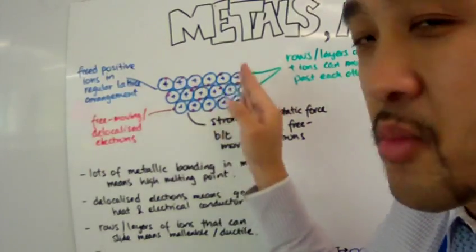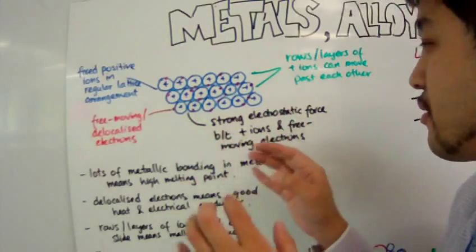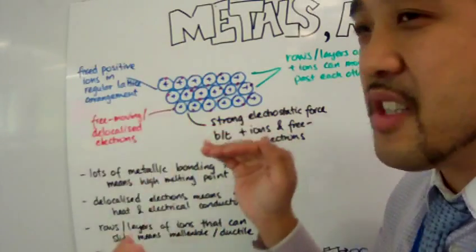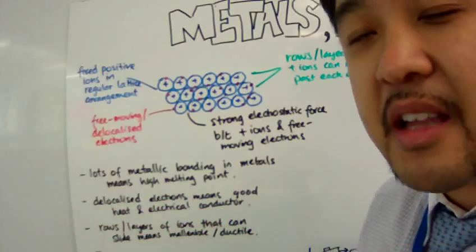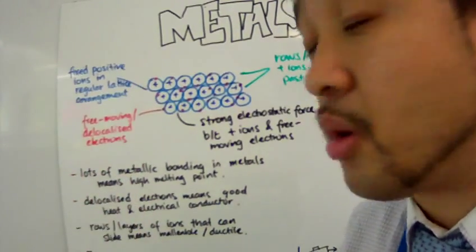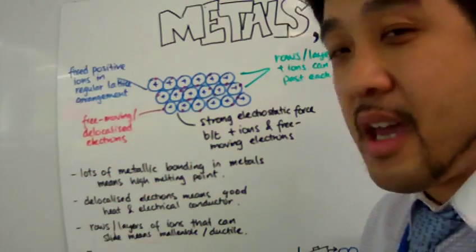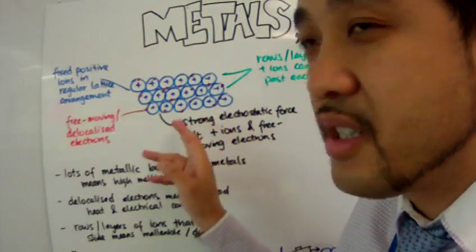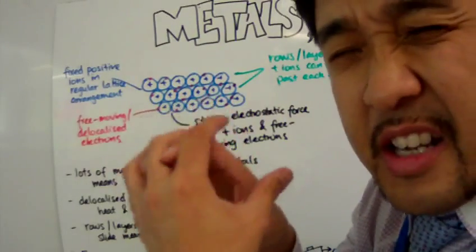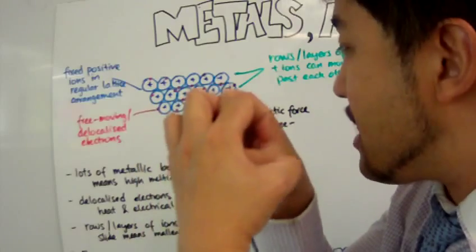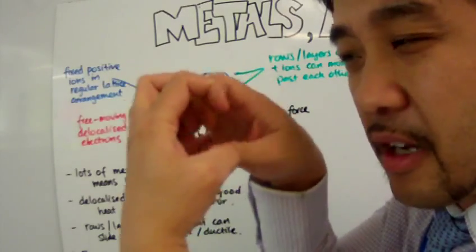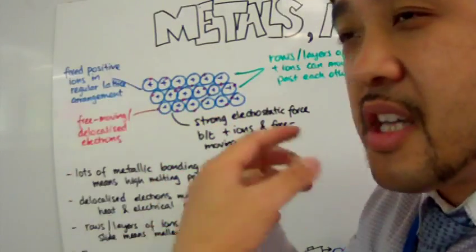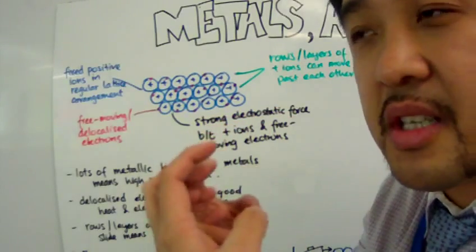So what we get is: fixed positive ions in a regular lattice arrangement, free-moving electrons, and layers of positive ions that can slide past each other — kind of like bags on a roller at the baggage claim at the airport. And between the positive ions and the delocalized electrons, there are strong electrostatic forces that hold and bind the whole thing compactly together.